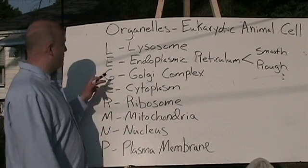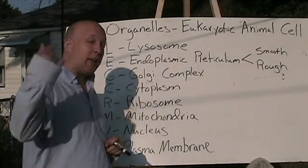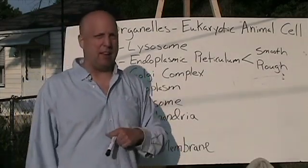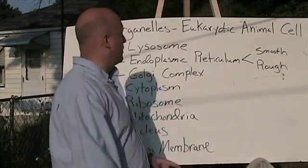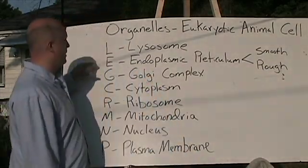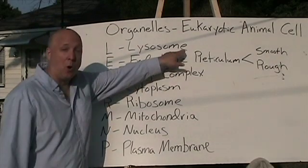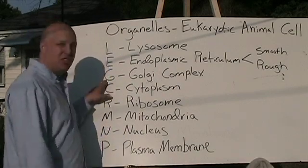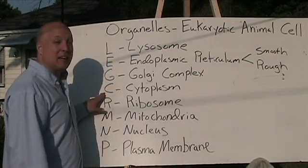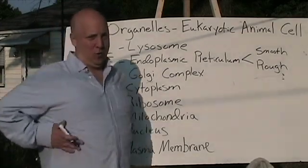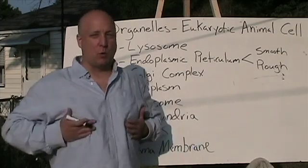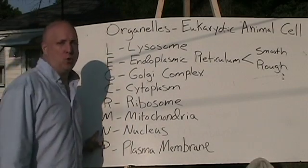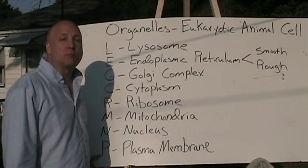Now that you've written that down, we're going to go through each one of these names. Please say it like I do. Some of the organelles' names I'm saying a little bit differently just so that we remember them, and the correct way will come along later. Here we go: L — Lysosome. E — Endoplasmic reticulum. G — Go-Go Golgi Complex. C — Cytoplasm. R — Ribosome. Please make sure that you do the hand and arm motions as well. M — Mighty Mitochondria. N — Nucleus. P — Plasma membrane.